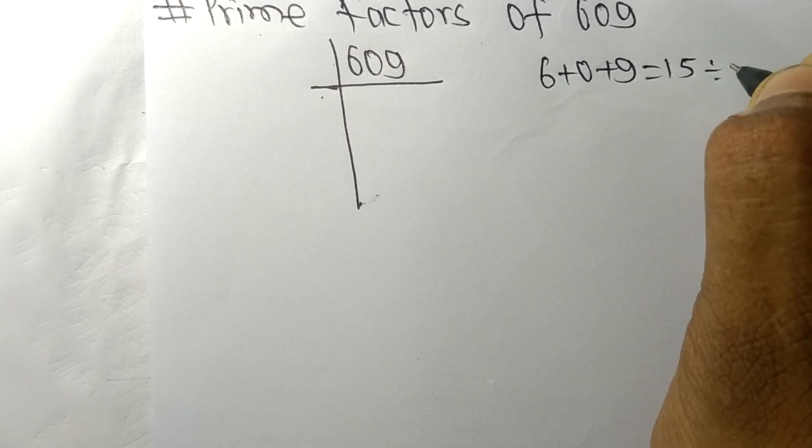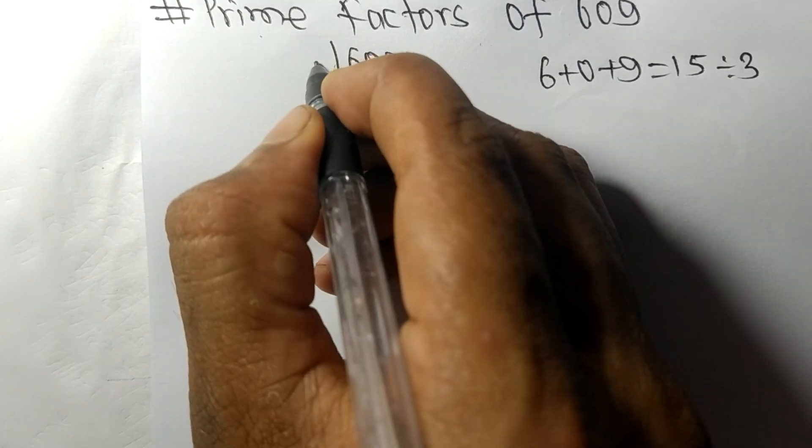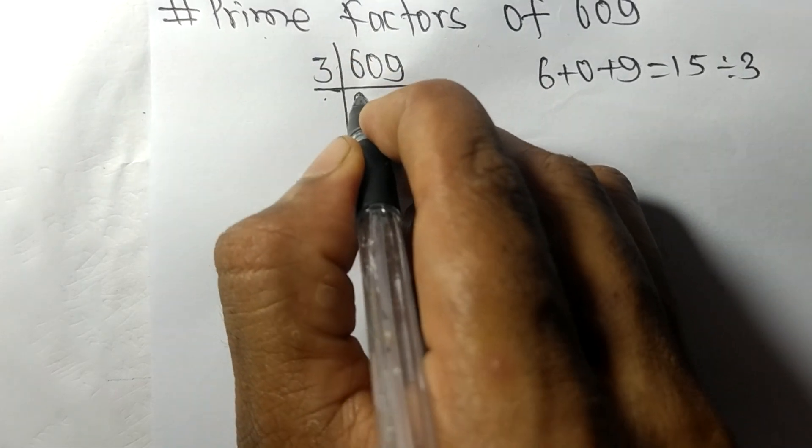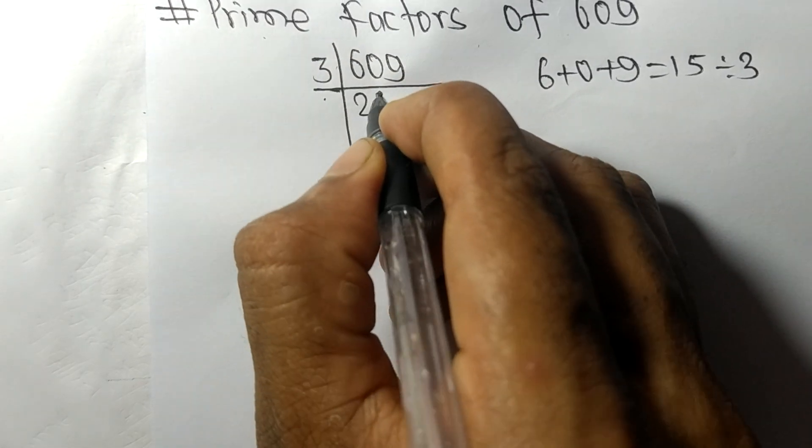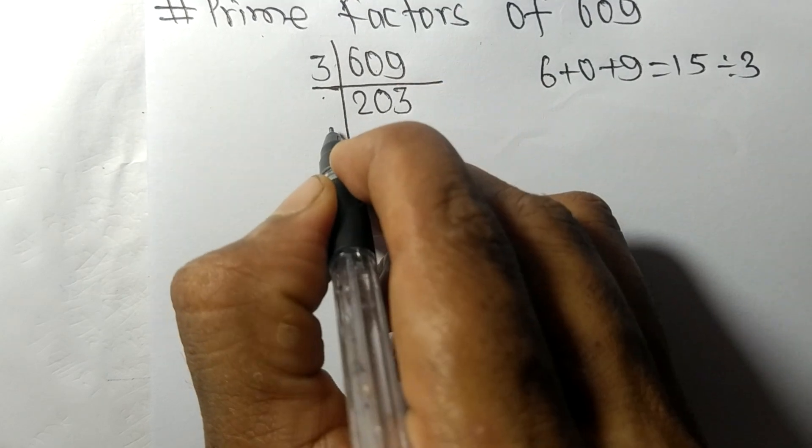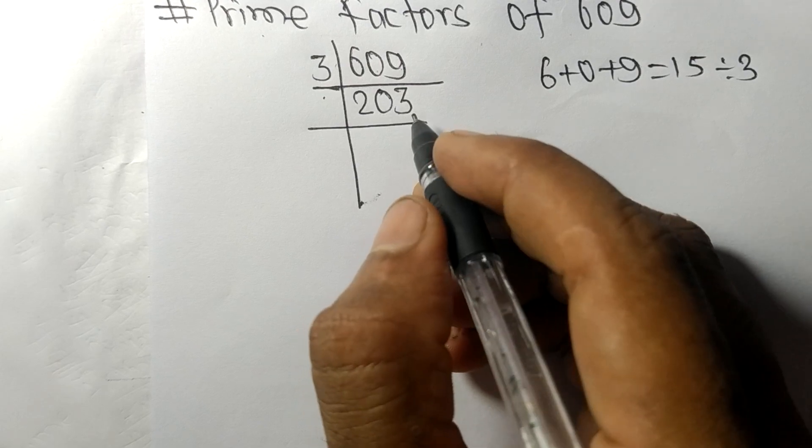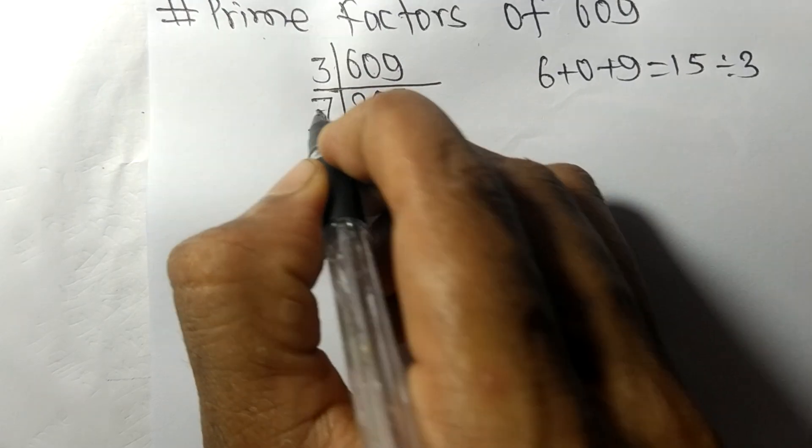So these whole numbers are also divisible by 3. 3 times 2 means 6, 3 times 0 is 0, 3 times 3 means 9. So now we got here 203, which is exactly divisible by 7.